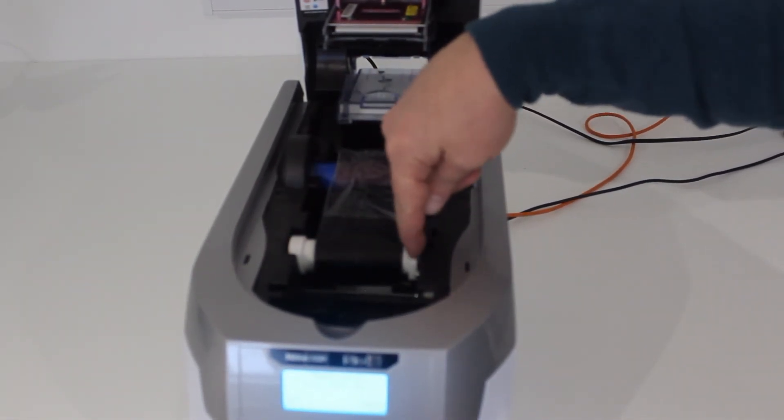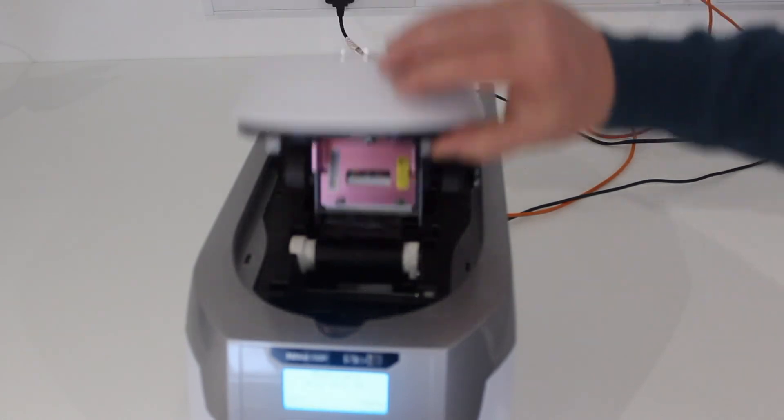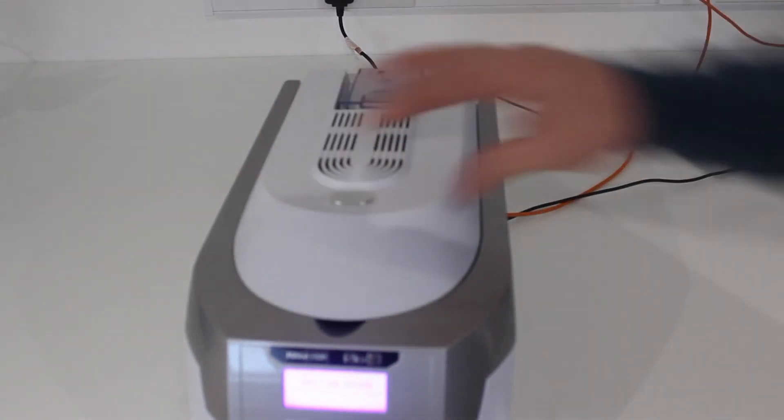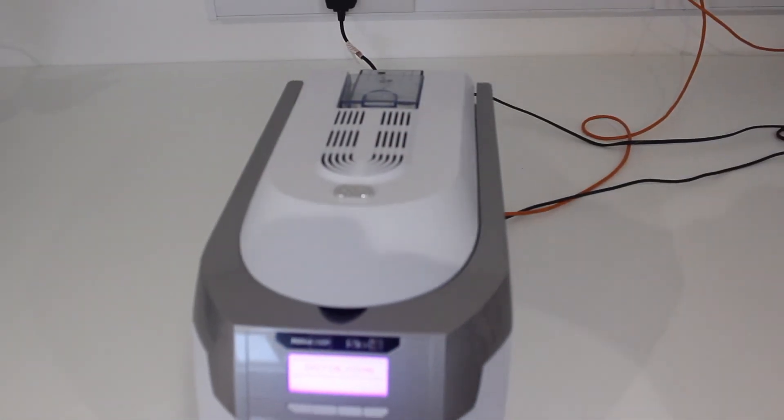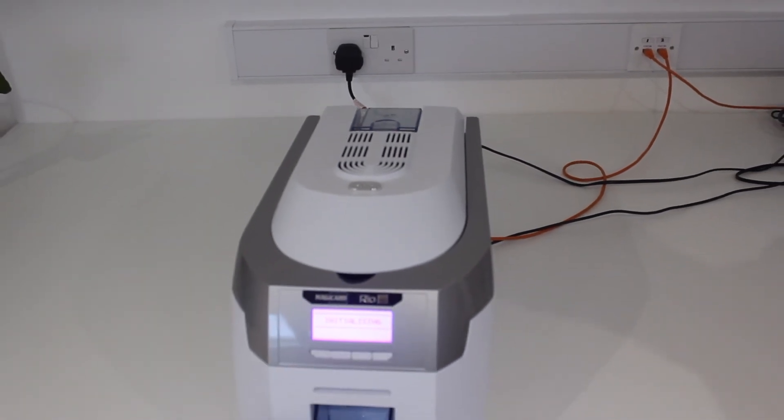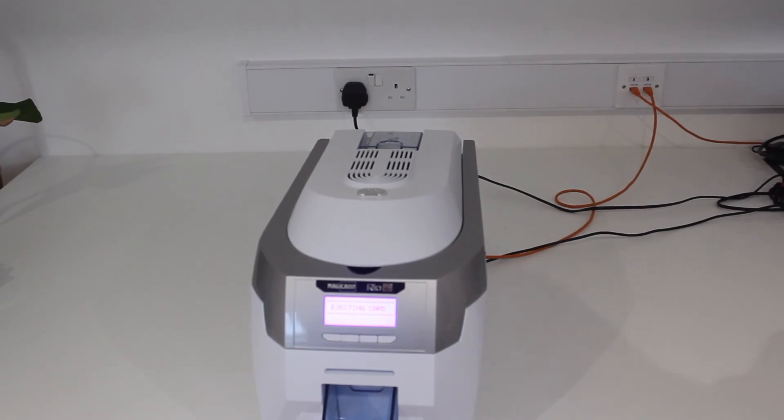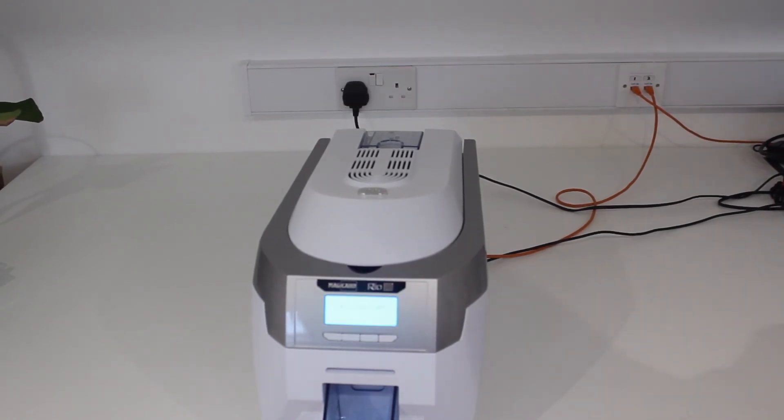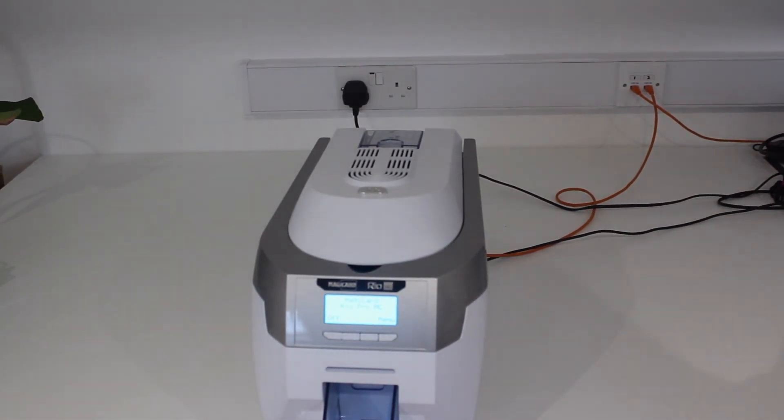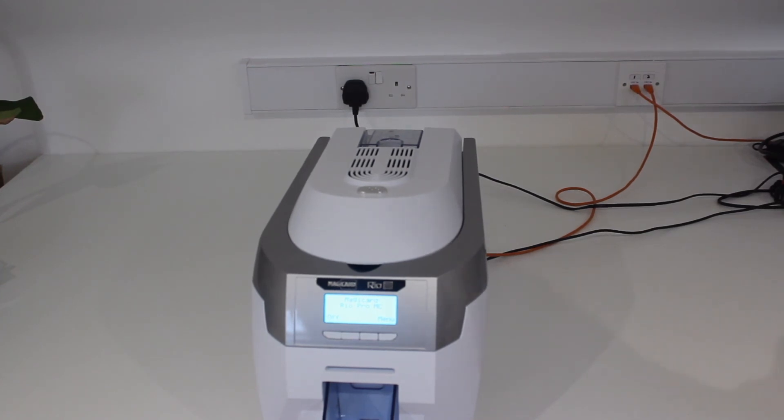Then close the lid. It will initialize and find the beginning of the next yellow panel. Every direct-to-card printer will always print yellow, magenta, cyan, black, overlay, and black if you're using double-sided, so it will always start at the beginning.